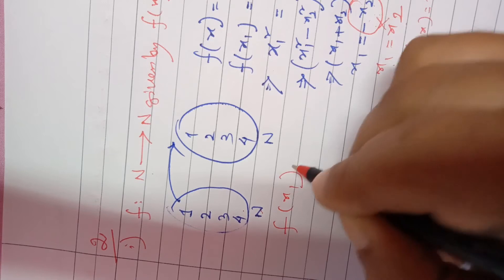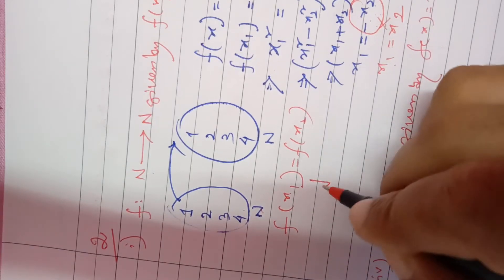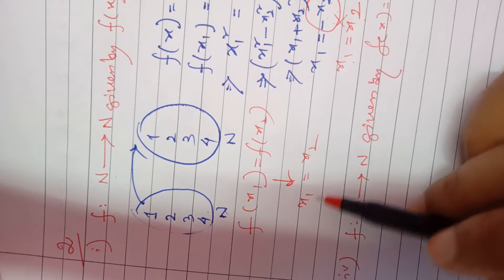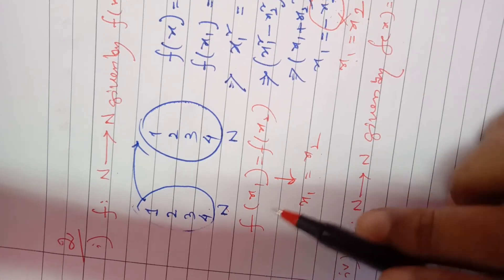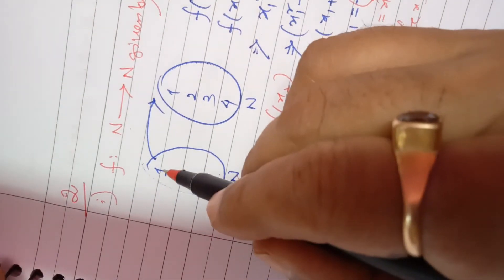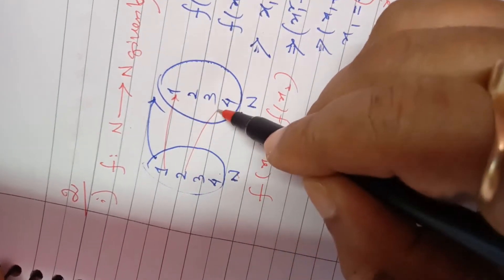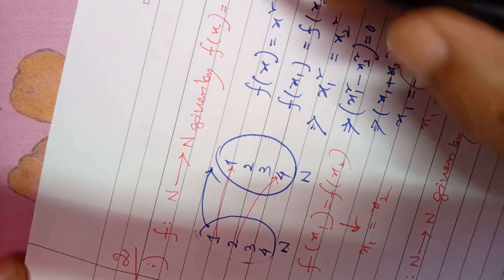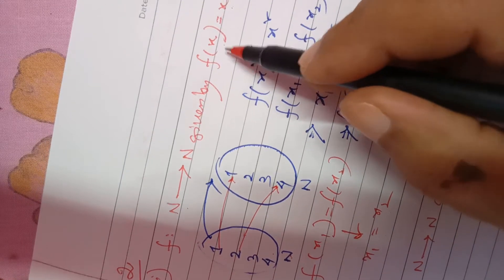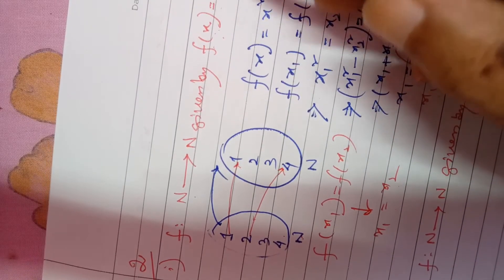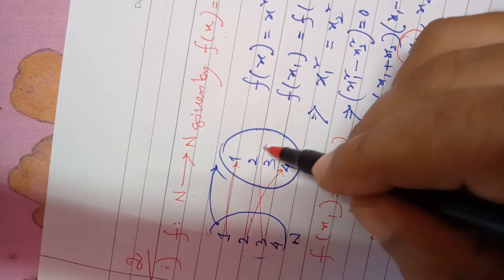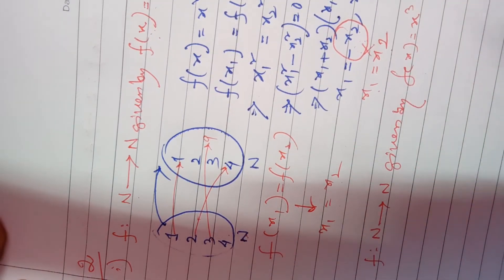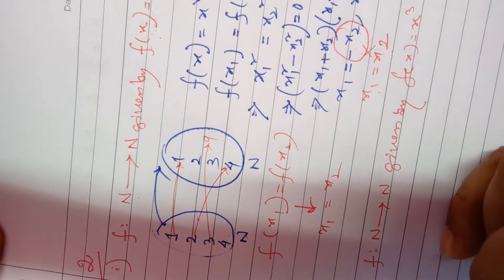Since f(x₁) = f(x₂) implies x₁ = x₂, when images are equal the pre-images are also equal. This tells us the function is one-one. For example: f(1) = 1, f(2) = 4, f(3) = 9, and so on. Each element maps to a distinct image, confirming it is a one-one function.